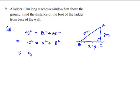That implies 10 squared equals 100, which equals a squared plus 64. Therefore a squared equals 100 minus 64, which is 36.